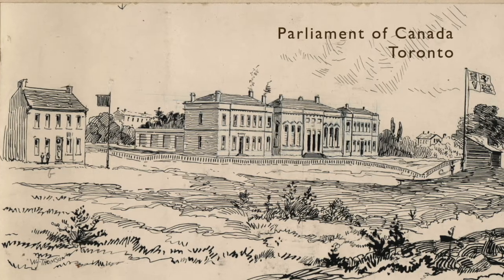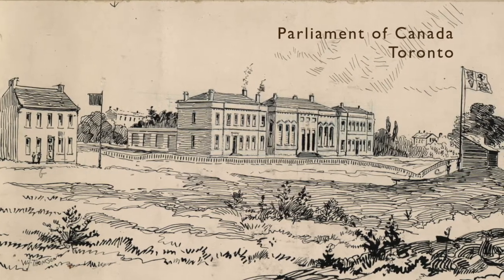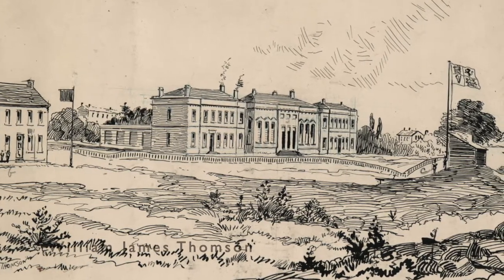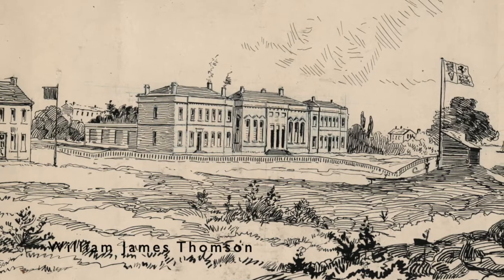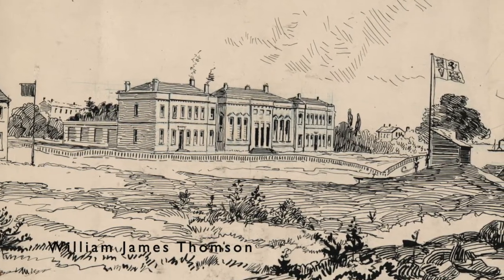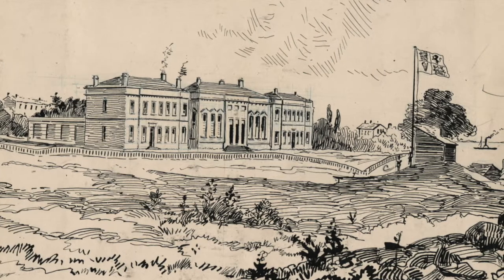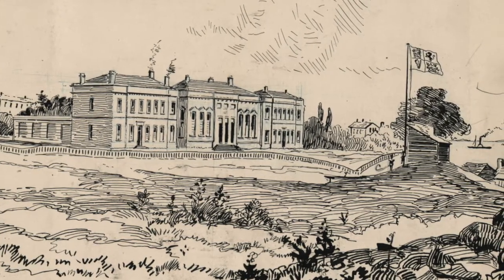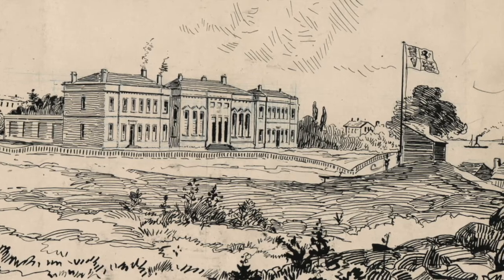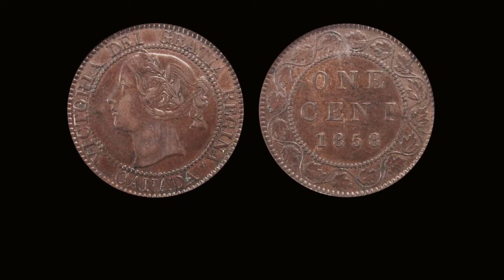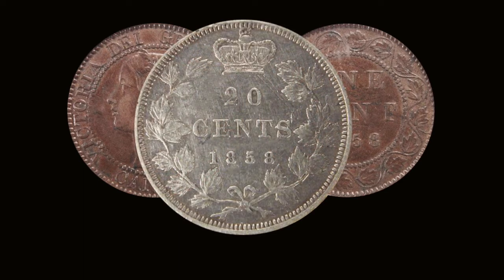By the 1850s, there was a lot of dissatisfaction with the state of the currency in the province of Canada, and many people were lobbying to adopt a decimal currency, but the British government opposed such a change. Finally, in 1853, there was a compromise when the province of Canada passed the Currency Act, allowing accounts to be kept in both pounds and dollars. Then, in 1857, the province revised the act, requiring all provincial accounts to be kept in dollars. They finally received permission to issue a provincial coinage, which began in 1858 — initially consisting only of copper cents and silver 20-cent pieces. Other denominations only joined in three years after Confederation, in 1870.